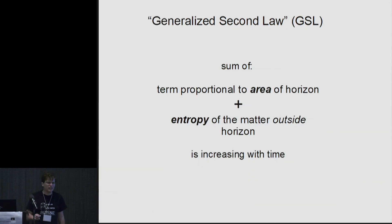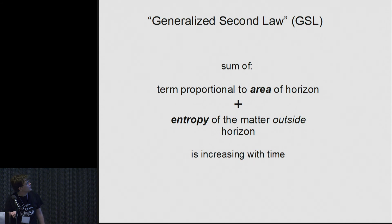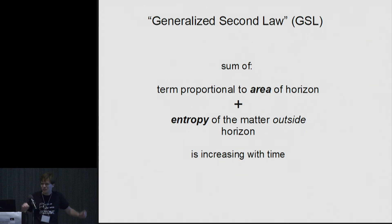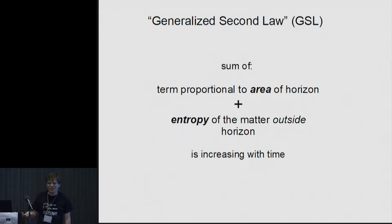The generalized second law states that you need to add an extra term to account for the entropy of the black hole, equal to the area of the event horizon. It says the term proportional to the area of the causal horizon, plus the ordinary matter entropy of the matter outside, increases with time. Note there's no term for the matter inside the black hole — that's supposed to be covered or replaced by the area of the horizon.